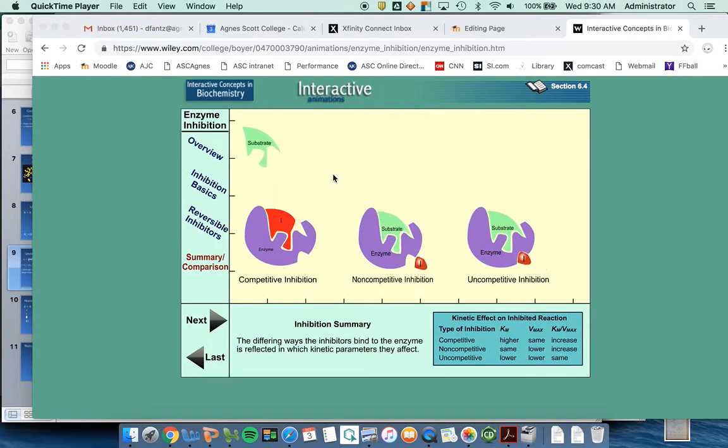Okay, we've talked about one type of reversible inhibition, the competitive inhibition, and now we're going to talk about the other two types of reversible inhibition: uncompetitive inhibition and non-competitive. Let's start with the uncompetitive inhibition.